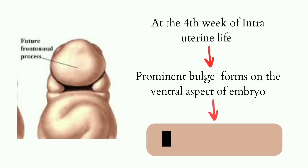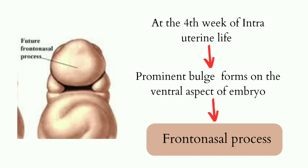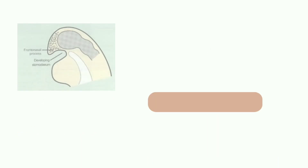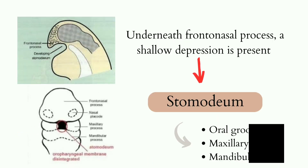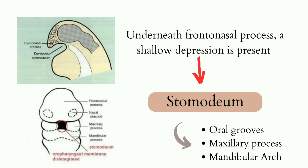At the 4th week of intrauterine life, a prominent bulge forms on the ventral aspect of the embryo, corresponding to the developing brain. This prominent bulge is called the frontonasal process. Underneath the frontonasal process, a shallow depression is seen, which corresponds to the primitive mouth. This is called the Stomodium.